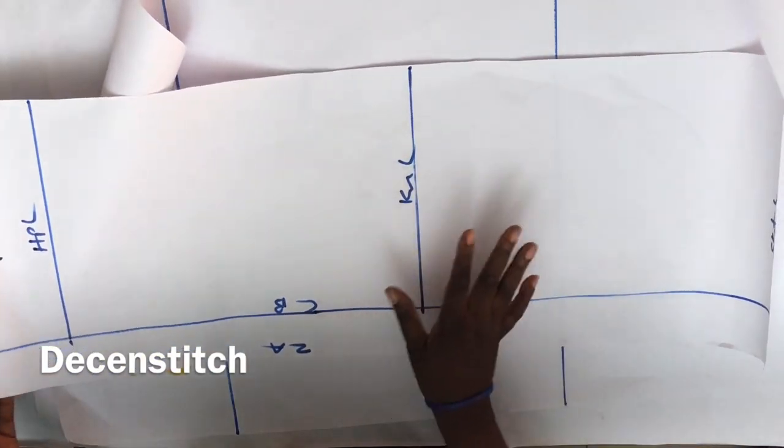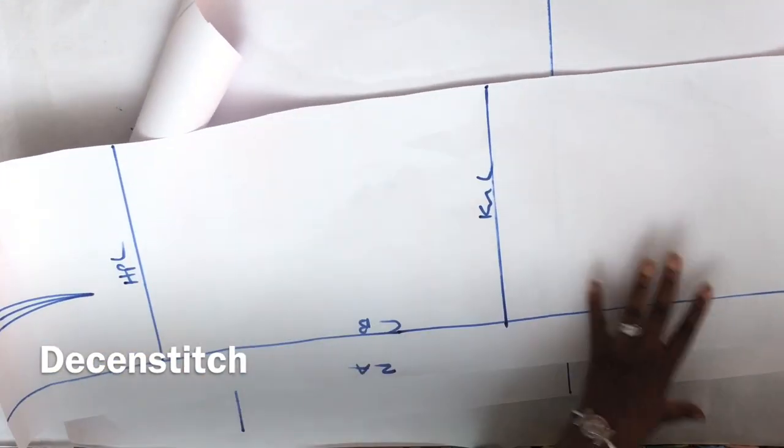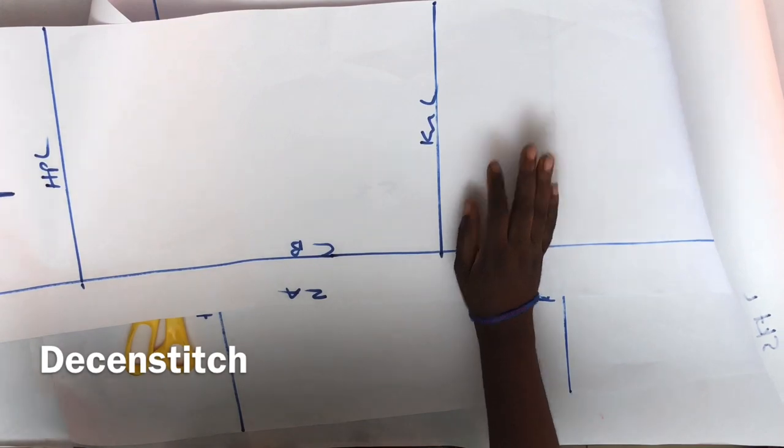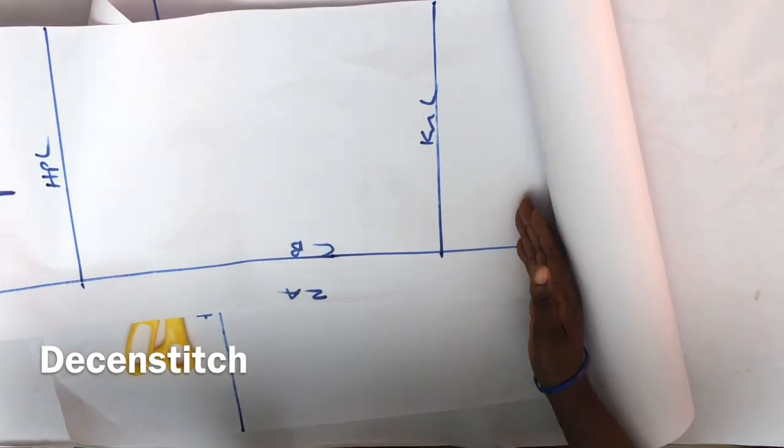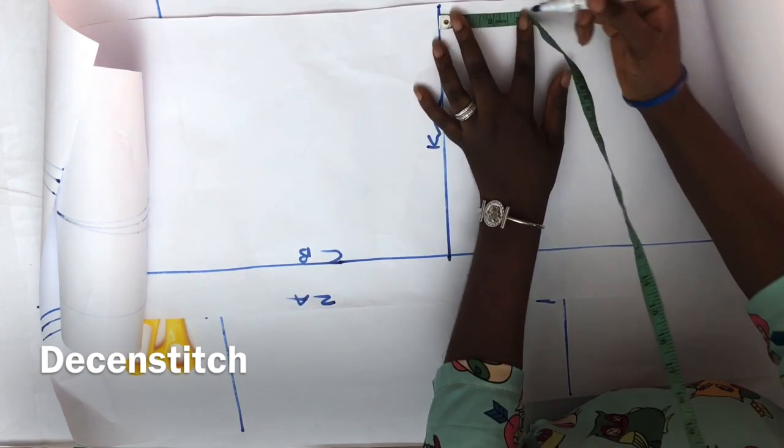For the back piece, the only thing I need to adjust is the length because this is a long skirt. I will adjust it to the length that I need. It is going to be below the knee, so I will mark two inches below the knee.